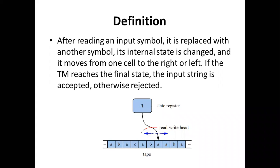The head moves to the left or right as indicated. If the Turing machine reaches the final state, the input string is accepted, otherwise it is rejected. After reading the input symbols, if the Turing machine reaches the final state, the input string is accepted; otherwise, it is rejected.